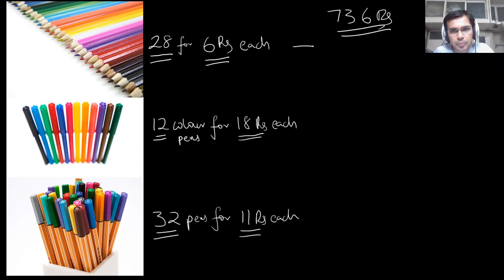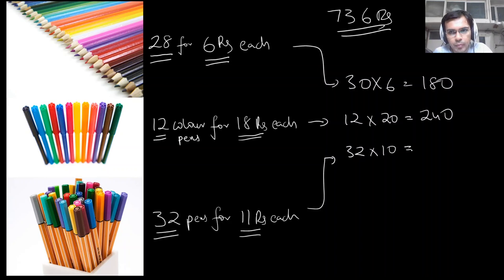So let's say if the shopkeeper hands over a bill of 736 rupees and you're actually wondering, is that correct? So what you would do, let's say make this 30 into 6, so that would be 180, just a quick estimate. This would be 12 into 20, 20 is close to 18, just use estimates to get a rough idea, and this would be around 240. And this, let's say 32 into 11, just keep it simple, 32 into 10, it's close, so this would be 320.